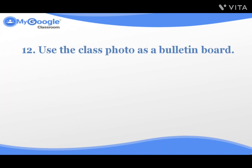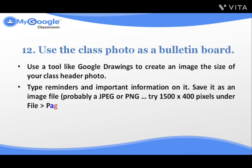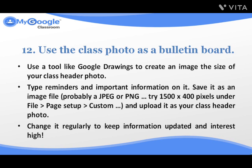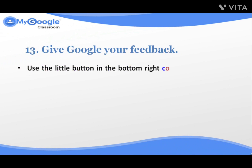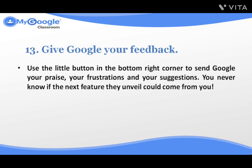Number twelve: Use the class photo as a bulletin board. Use a tool like Google Drawing to create an image the size of your class header photo. Type reminders and important information on it, save it as an image file — probably a JPEG or PNG — try 1500 by 400 pixels under file, page setup, custom, and upload it as your class header photo. Change it regularly to keep information updated and interest high. Number thirteen: Give Google your feedback. Use the little button in the bottom right corner to send Google your praise, frustration, and suggestions — you never know if the next feature they unveil could come from you.